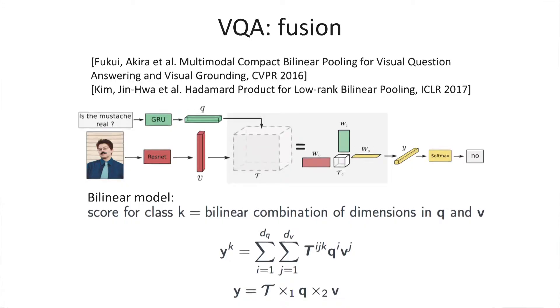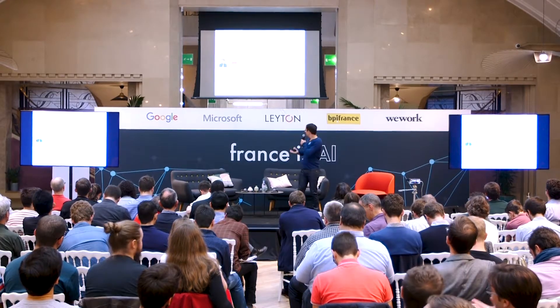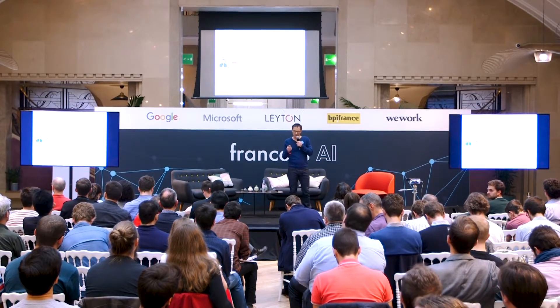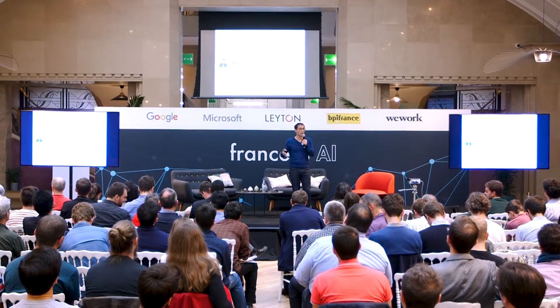This element-wise product is related to a broader term called bilinear transformation, or bilinear modeling of the problem. The two leading VQA techniques — from Fukui and Kim teams — use this kind of bilinear pooling. In the equation, each component of the output YK is a sum over all products combining each dimension of both inputs. This is classically represented by a three-way tensor T.